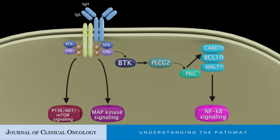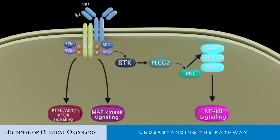A central component of the BCR signaling cascade is Bruton's tyrosine kinase (BTK), which links BCR and canonical NFKB signaling through the CARD-11, BCL-10, MALT-1 signalosome complex.